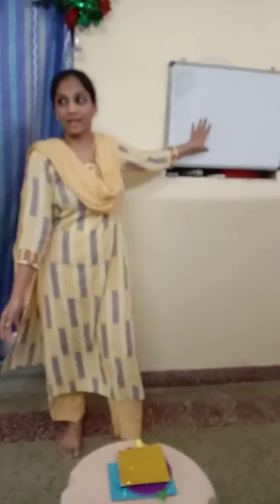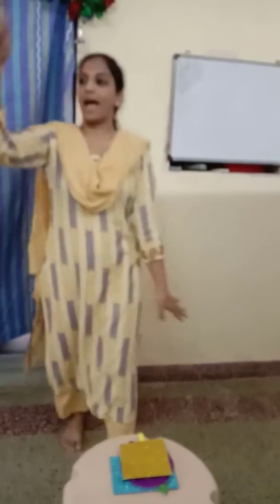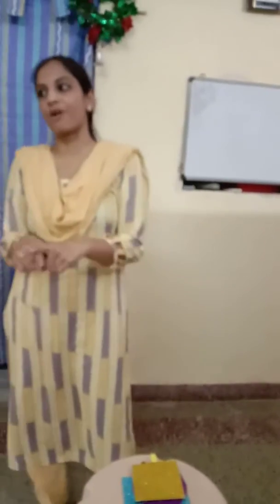Children, today we are going to learn about shapes. The world is full of shapes, do you know children? We are sitting in a classroom and you can see many shapes. The blackboard looks like a square. The fan looks like a circle, round and round. Sitting in a bench is also the shape of a rectangle.